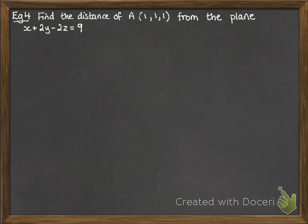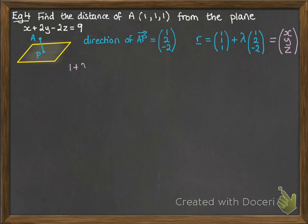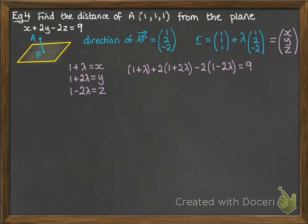We're going to find the distance of point A from this plane. The direction of AP is 1, 2, minus 2 — we get that straight from the equation of the plane since it's the normal. Then r is our vector equation of line AP: we've got the position vector of A, the direction it's going in, and lambda multiples of that direction. We set that equal to x, y, z and work out the intersection of that line and the plane by putting those expressions into the equation of the plane. We work out that lambda has to be 8 ninths.